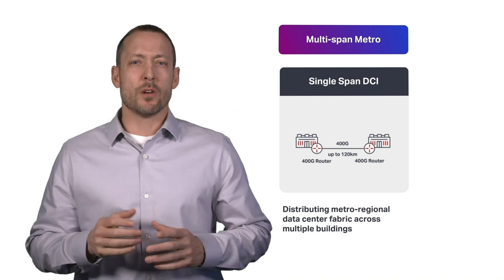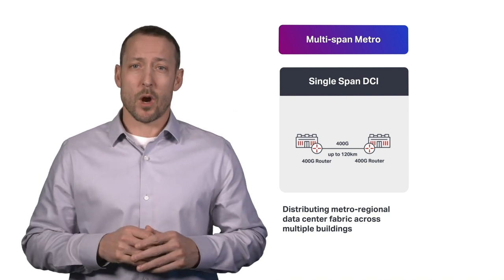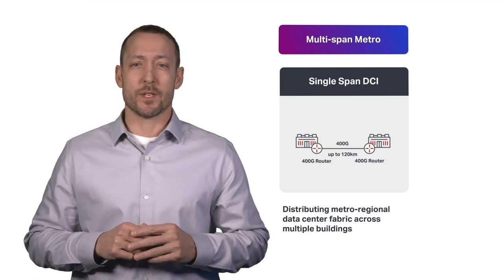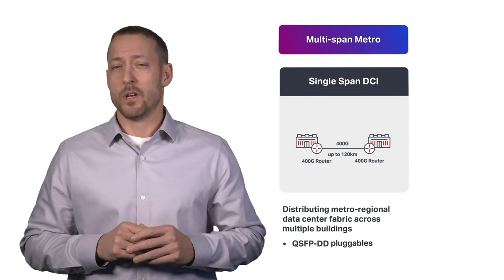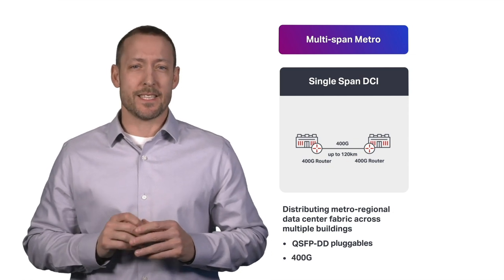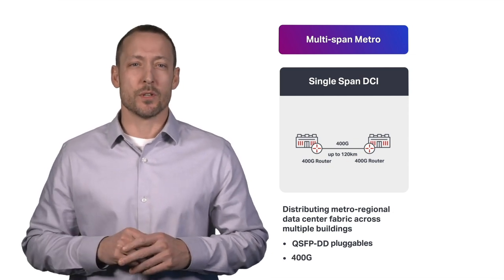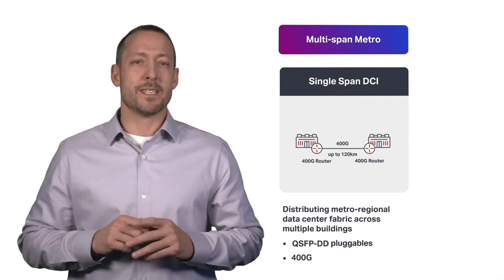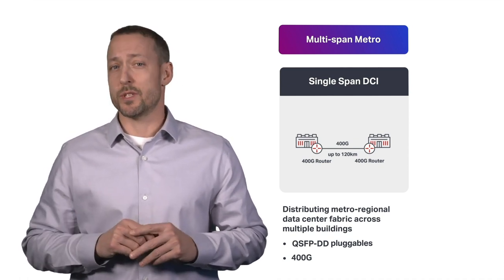To address 400 ZR single span DCI requirements, WaveLogic 5 Nano will also be offered as a standalone QSFP DD pluggable. The design is simplified to support 400 gig wavelength capacity at distances up to 120 kilometers in the smallest footprint and lowest power possible to maximize density in 400 gig switches and routers.